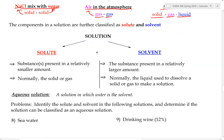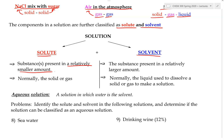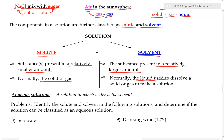A solution consists of at least two different substances, and those components are further classified as solute and solvent. The solute is the substance present in a relatively small amount. The solvent is the substance present in a relatively larger amount. In most solutions we'll be seeing, the solid or gas is the solute, and the liquid used to dissolve the solid or gas is the solvent.